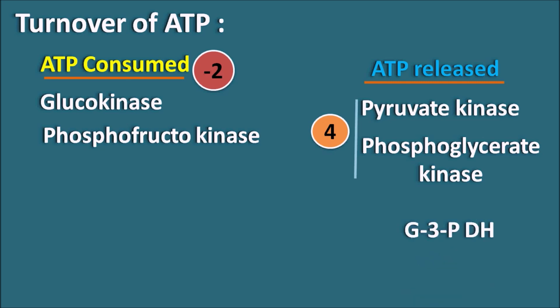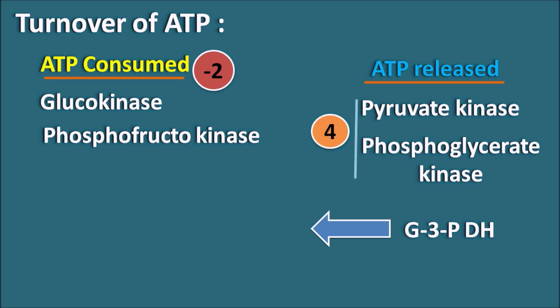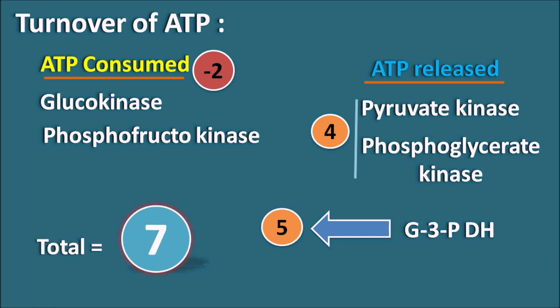Glyceraldehyde-3-phosphate dehydrogenase releases two NADH molecules. With 2.5 ATP per NADH, that gives five ATP molecules. So the total ATP released by glycolysis under aerobic conditions is seven ATP molecules.